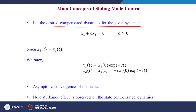This is a first-order homogeneous differential equation where c > 0. Here x₂(t) = ẋ₁(t). The solution is x₁(t) = x₁(0)·e^(-ct) and x₂(t) = ẋ₁(t) = -c·x₁(0)·e^(-ct). This shows that the system states x₁ and x₂ converge to the equilibrium point asymptotically.